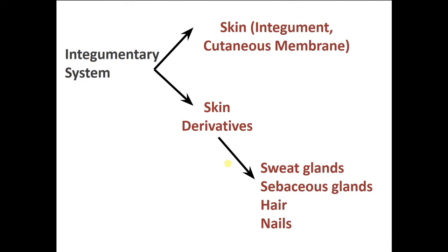It's time for our lecture on the integumentary system. This is the first system we're going to cover in A&P1. In fact, it's one of the four systems we're going to do: the integumentary, skeletal, nervous, and muscular, all in A&P1. So we only have four more things to do this semester — that's not too bad.